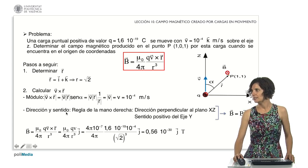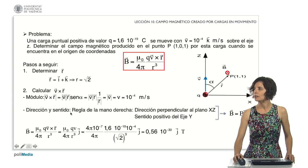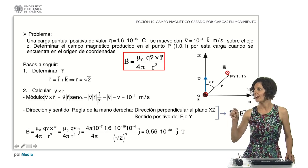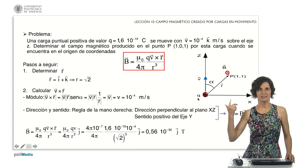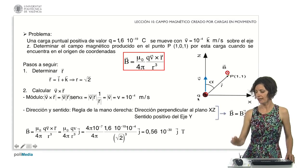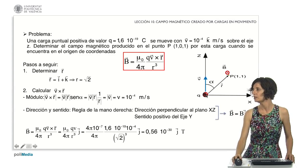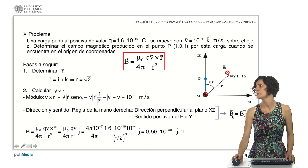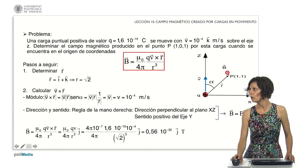Next, we are going to calculate the direction and the sense. The product of vectors V and R must be perpendicular to the plane defined by these vectors. Considering V and R lie in the X-Z plane, the resulting vector will align with the Y-axis. Our remaining task is to determine whether the sense will be positive or negative. To determine this, we use the right-hand rule. By aligning the four fingers of the right hand from V to R, the thumb points in the sense of the positive Y-axis. Hence, the magnetic field equals a magnitude multiplied by the unit vector J.